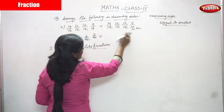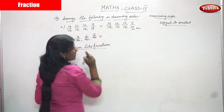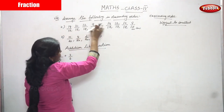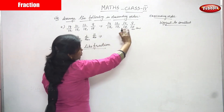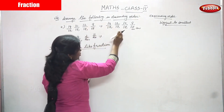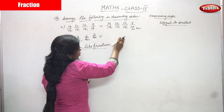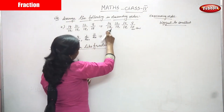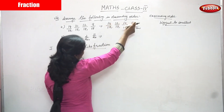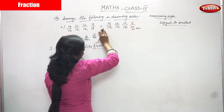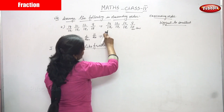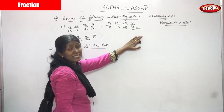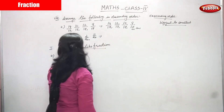All the denominators are the same, and all the numerators are different, so you have to arrange in descending order. Start with the biggest number and end with the smallest number. That is what you have written — 14 is the very biggest number and the smallest number is 9. You start with 14 and end with 9: 14 by 17, 12 by 17, 10 by 17, 9 by 17. This is the proper descending order and the answer is perfectly correct.